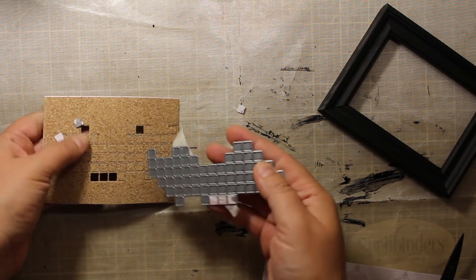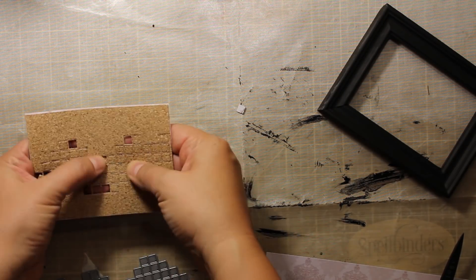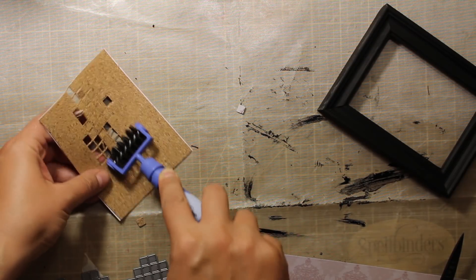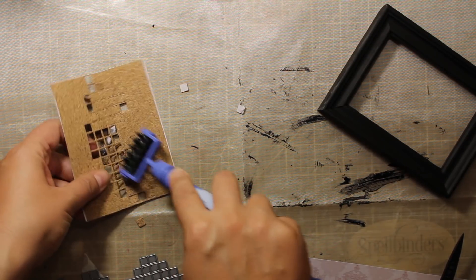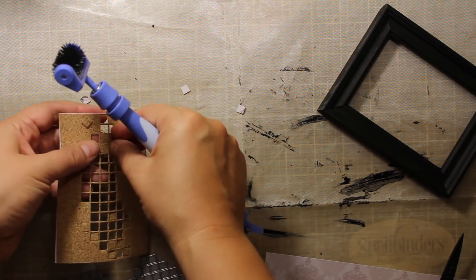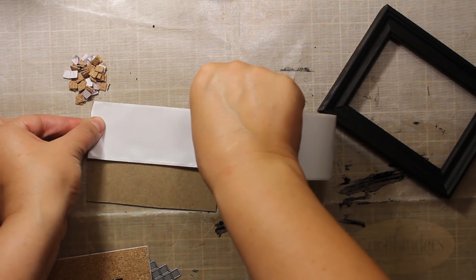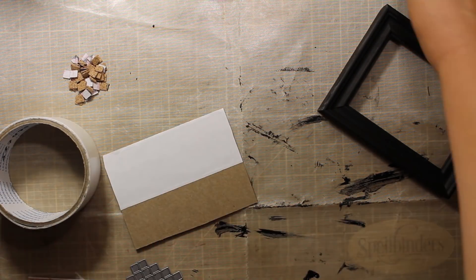Now I'm placing my die on top and sending it through the machine. This is grid collage by Poppy Stamps. I'm using it to create a tile background and by the way all the dies I'm going to use for this project are by Poppy Stamps.